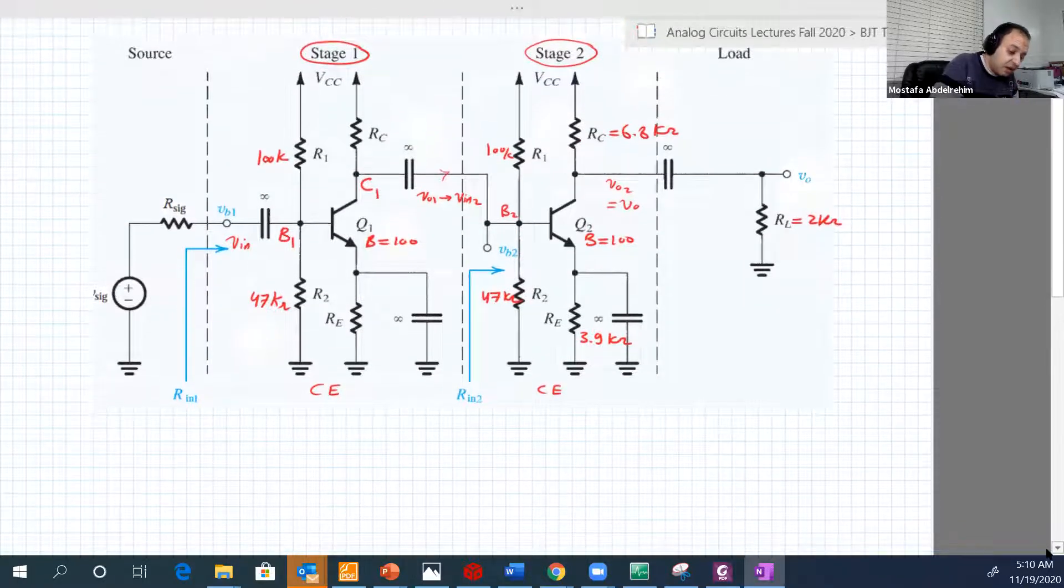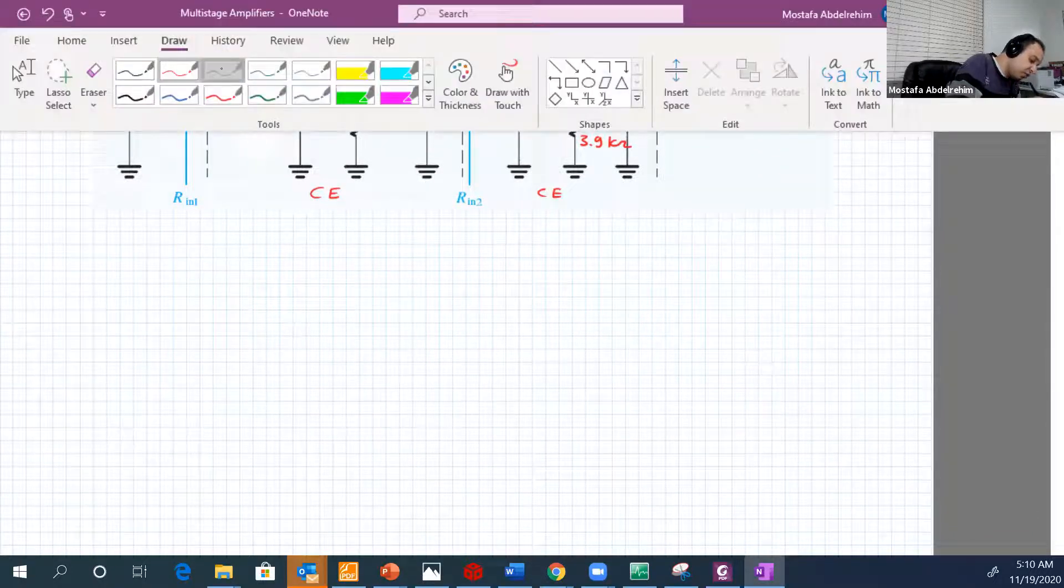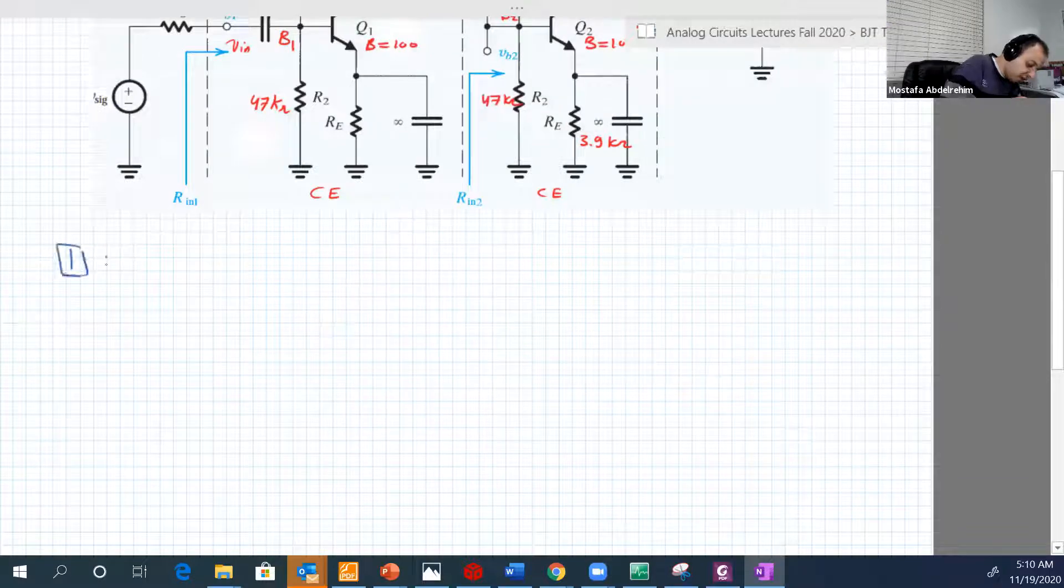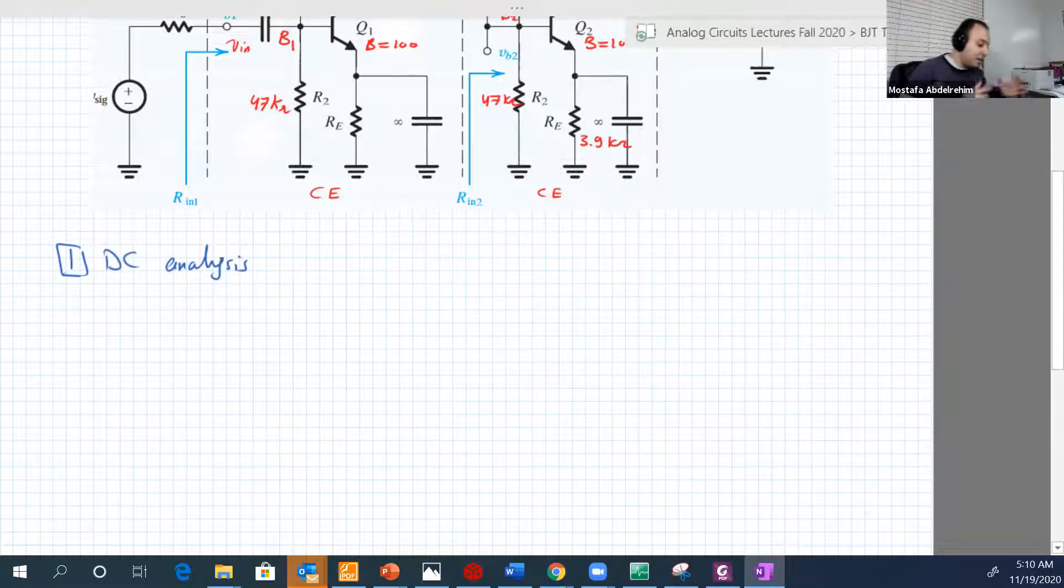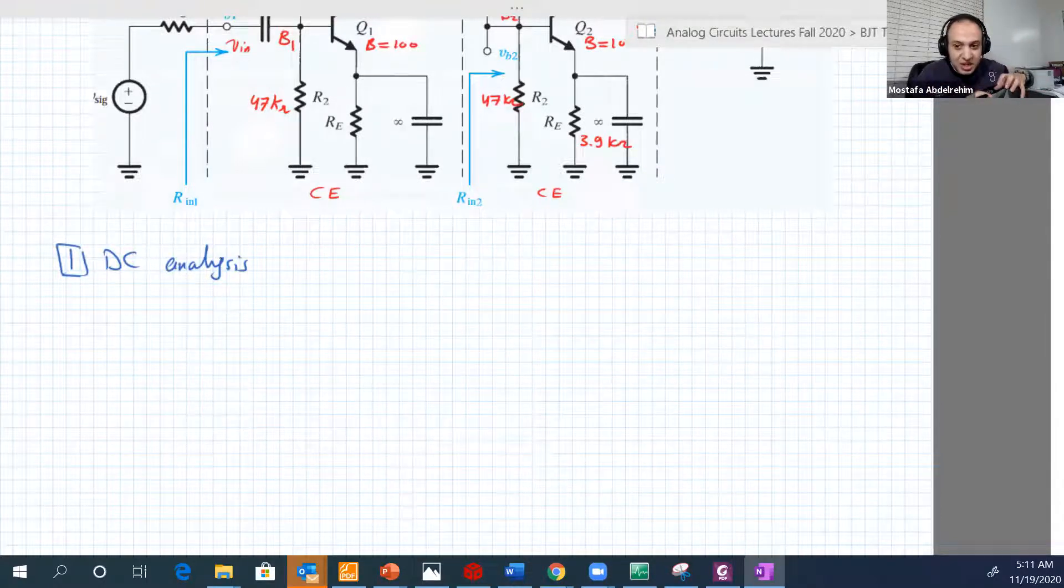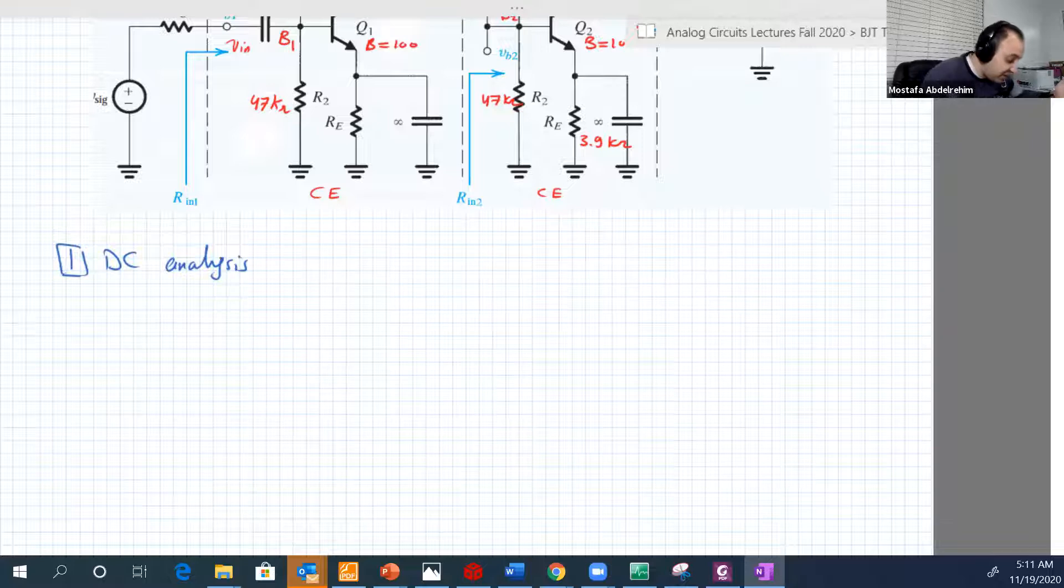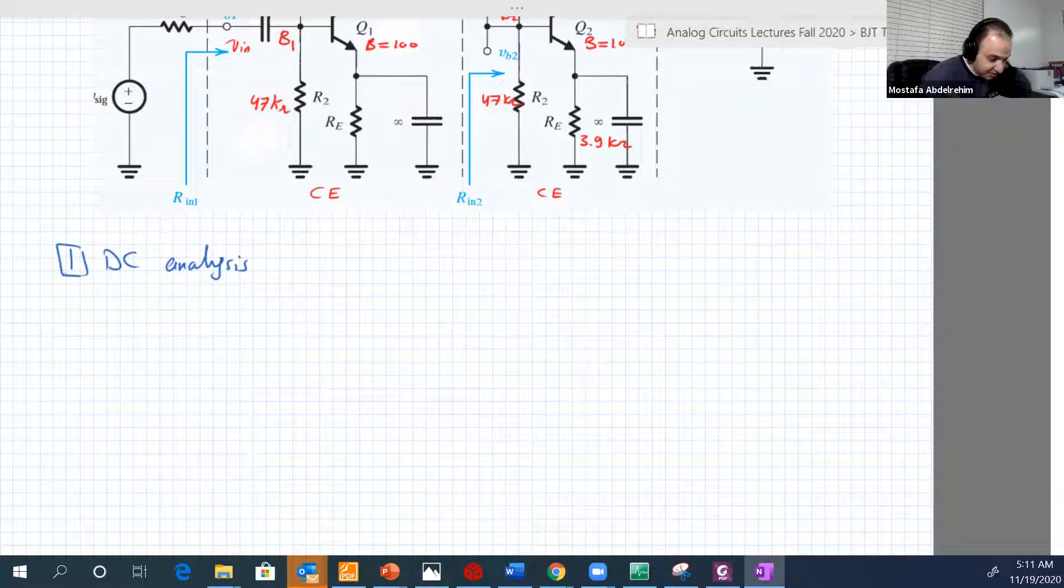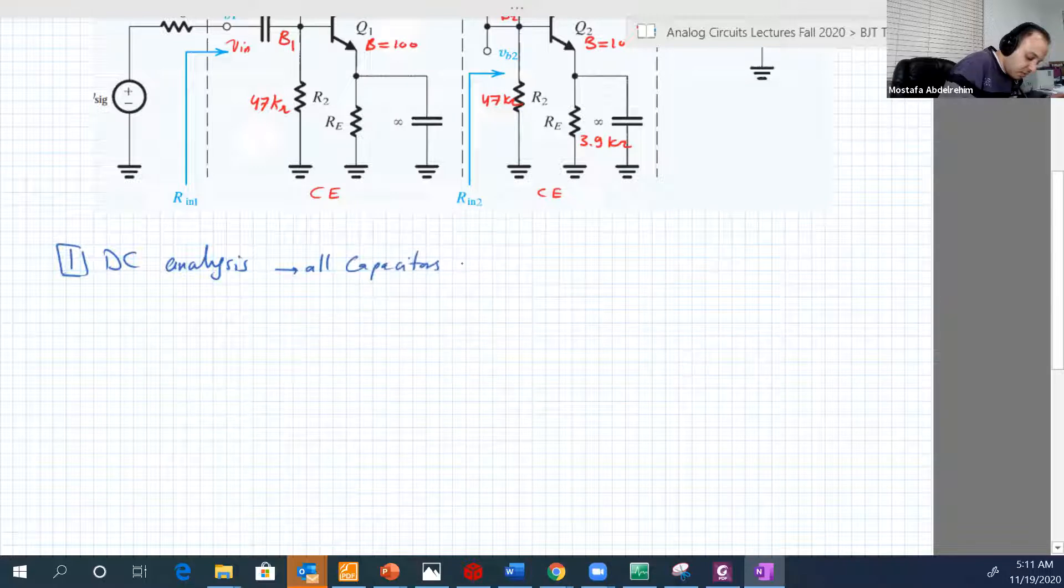So let's first start by the DC. So DC analysis. Let's solve it with blue. So number one, DC analysis. So I guess it's a very big circuit. Maybe it looks scary for you, but believe me, when you just apply the rules, you will find it easy. So let's see why it's easy. So in DC, all capacitors are open.